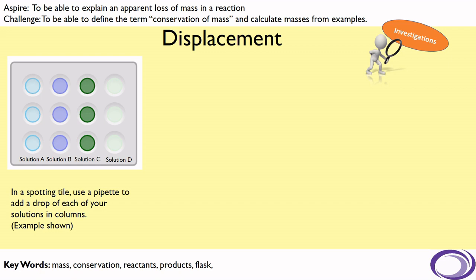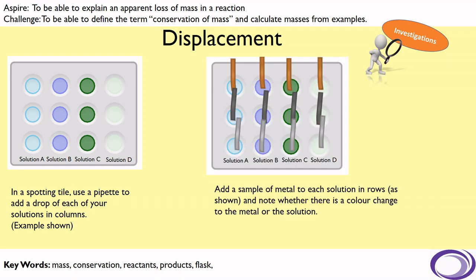The final reaction we will carry out is called displacement. To do that we will use a piece of equipment called a spotting tile. Using a pipette, we will add solutions with different metals in them into columns in the spotting tile. Once we've done that we can then add samples of metals to each of those solutions, and simply note down whether there is a colour change to the metal or to the solution. That would indicate displacement has occurred. We will repeat it to make sure that all the metals and solutions — all the different combinations — have been tested, so that we can then rank those metals in terms of their reactivity.